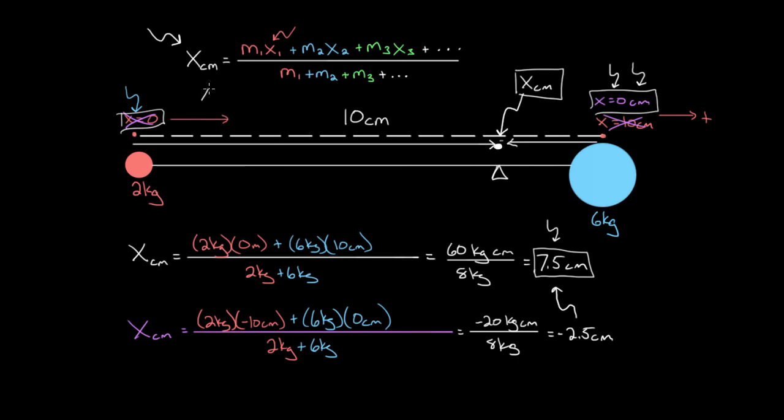So recapping, you can use the center of mass formula to find the exact location of the center of mass between a system of objects. You add all the masses times their positions, and divide by the total mass. The position can be measured relative to any point you call x equals zero, and the number you get out of that calculation will be the distance from x equals zero to the center of mass of that system.